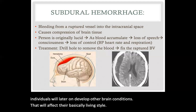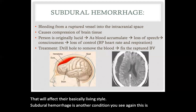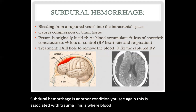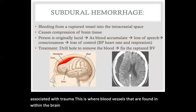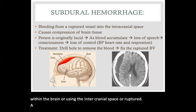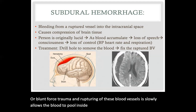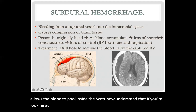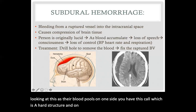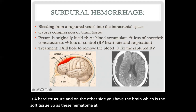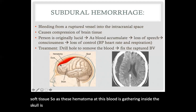Subdural hemorrhage is another condition, also associated with trauma. This is where blood vessels found within the brain or within the intracranial space are ruptured — a very common reason being accidents or blunt force trauma. Rupturing of these blood vessels slowly allows blood to pool inside the skull. As the blood pools, on one side you have the skull, which is a hard structure, and on the other side you have the brain, which is soft tissue. So as this hematoma gathers inside the skull, it slowly pushes down on the brain.